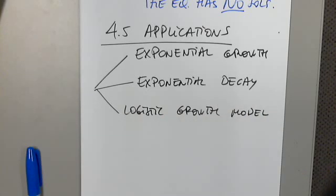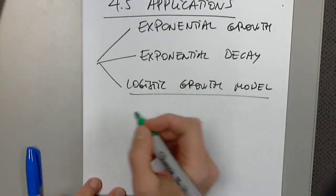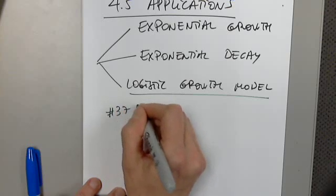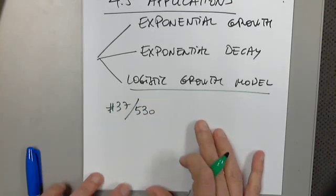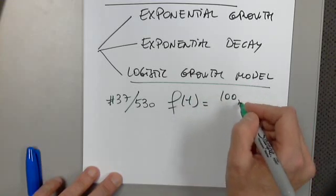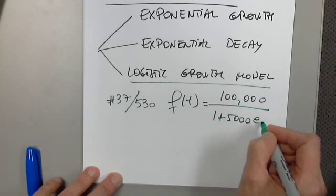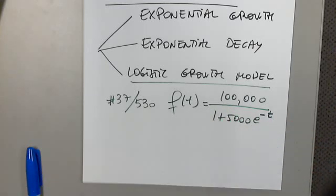Okay. Let's start with a logistic growth model. Okay, 37. So logistic is the first one. 37 on page 530. I'm going to copy a function. We're going to look at it and explain and answer the questions. What do I see here without even reading the information yet. This is t.